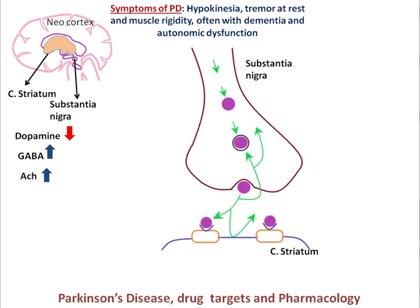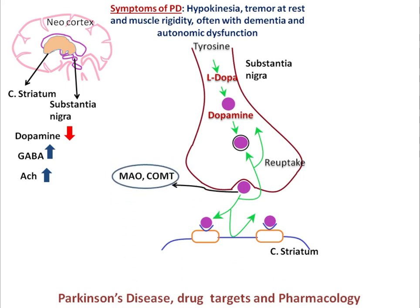Inside the brain in the substantia nigra and corpus striatum, tyrosine is converted into L-dopa and further converted into dopamine. This dopamine acts at the post-synaptic region at specific D1 and D2 receptors. Some dopamine is reuptaken back by neuronal cells, while the remainder is converted into metabolic products with the help of MAO enzyme and COMT enzyme.